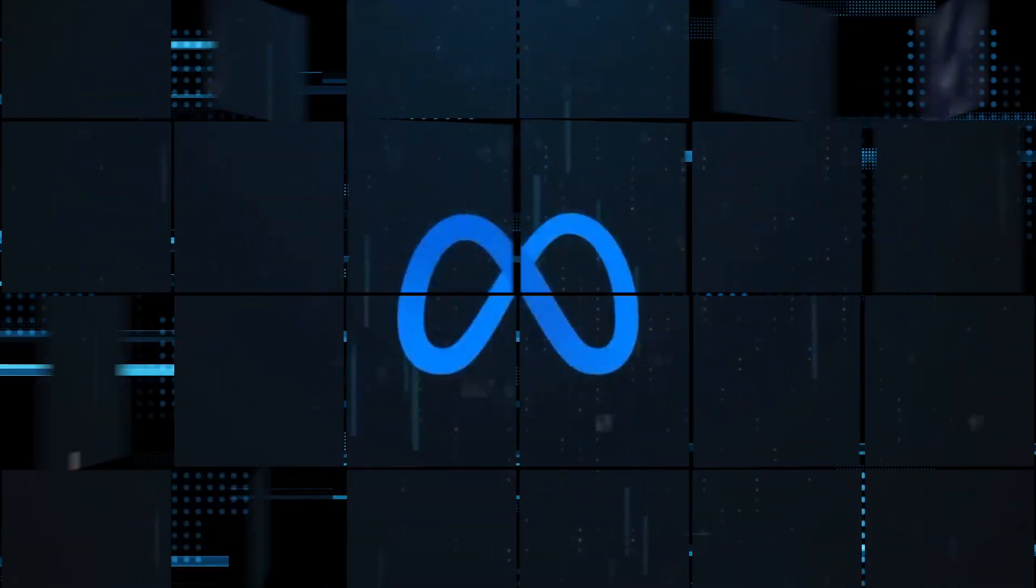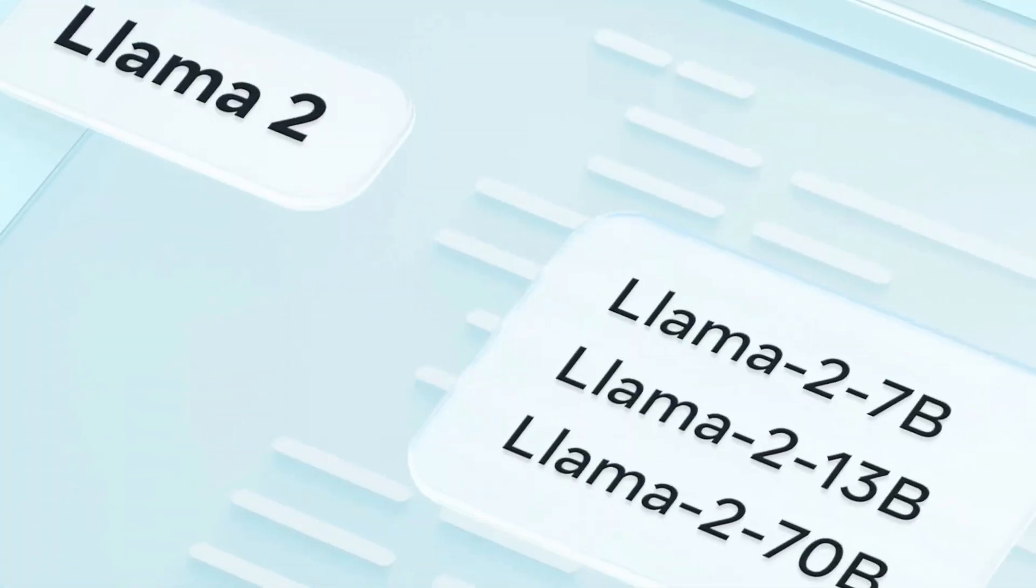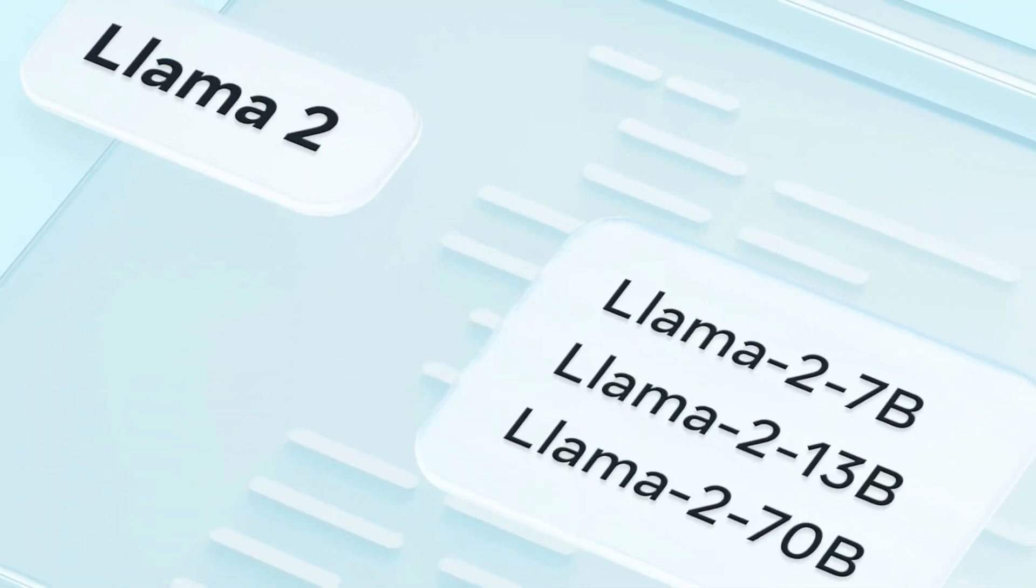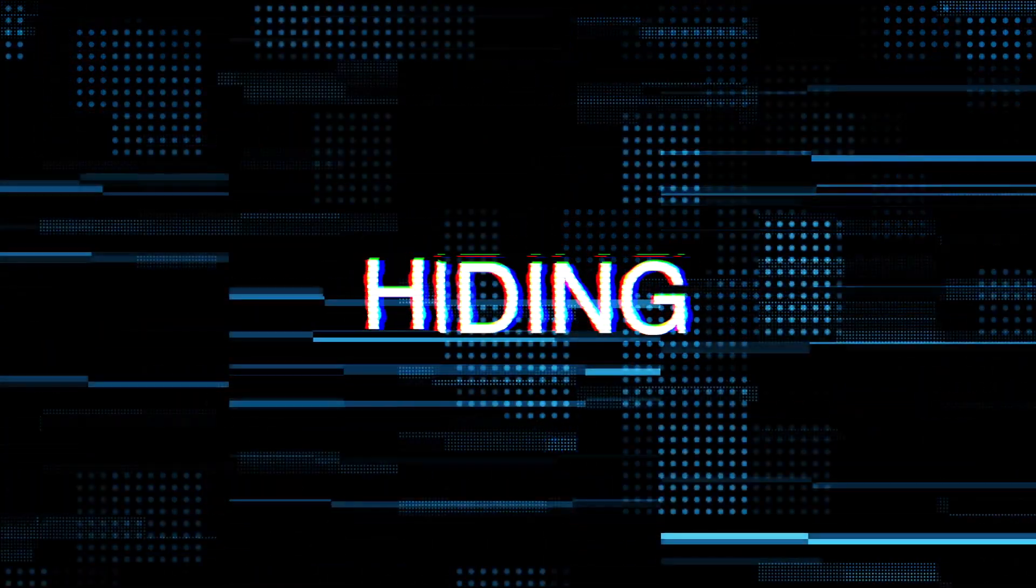Meta has recently launched Llama 2, an open-source large language model which is now free and available for research and commercial use. What is that too-powerful-to-be-released AI tool rolled up in their sleeves? Why is Meta hiding it?